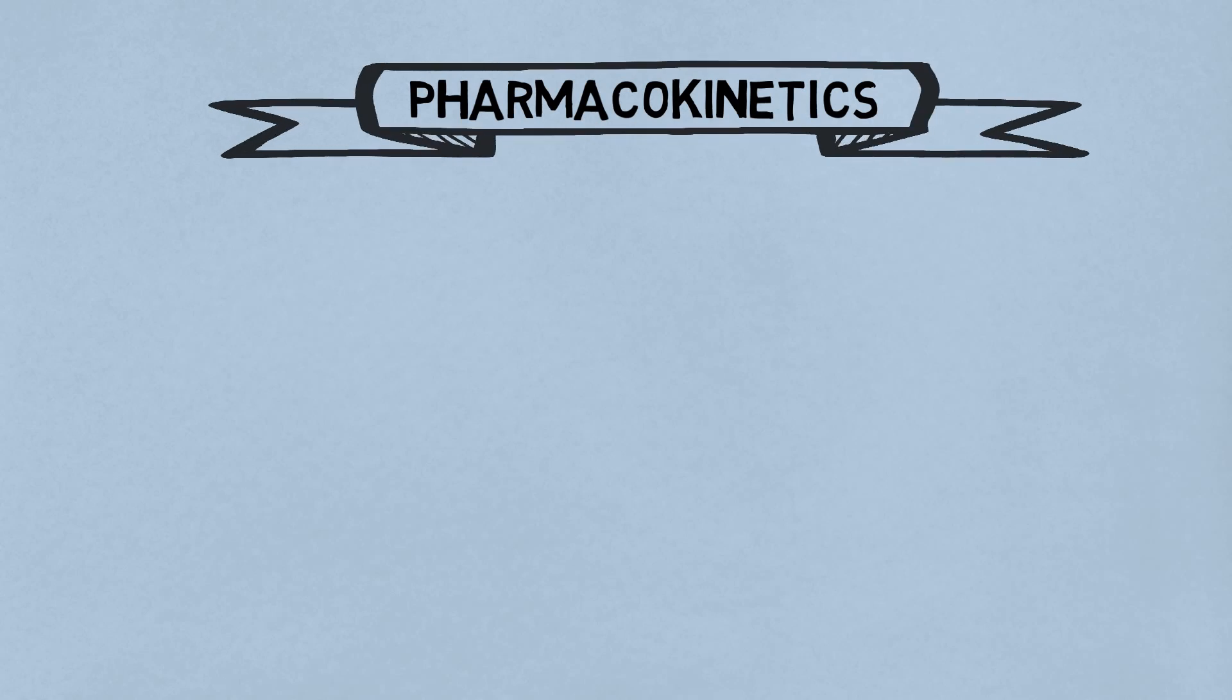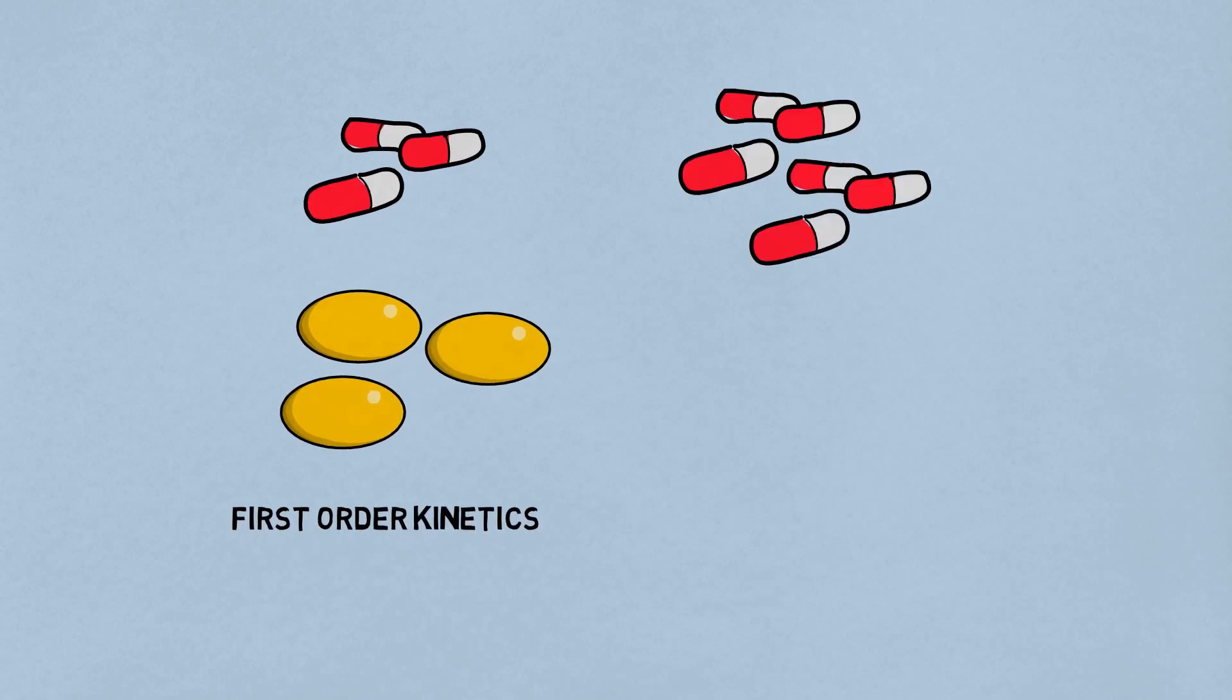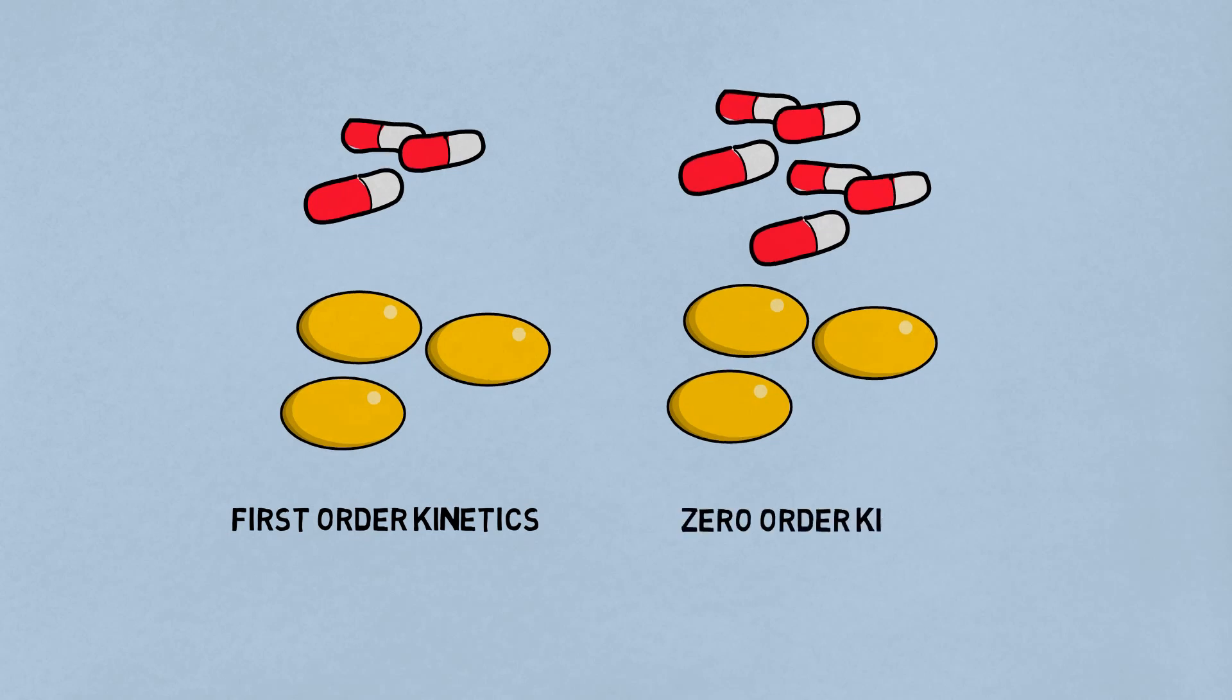Pharmacokinetics. The kinetics of the metabolism is capacity-limited. That is, for a particular quantity of drug, if the enzyme is adequate, it will follow first-order kinetics. But, when we increase the dosage of the drug, it will follow zero-order kinetics.